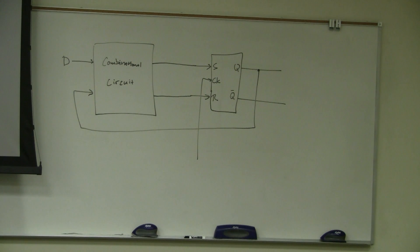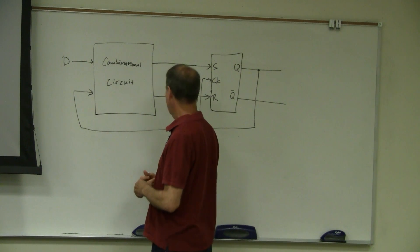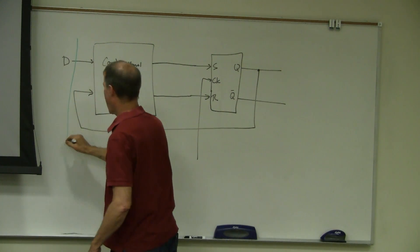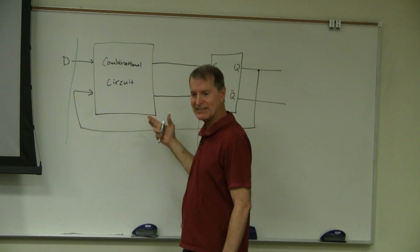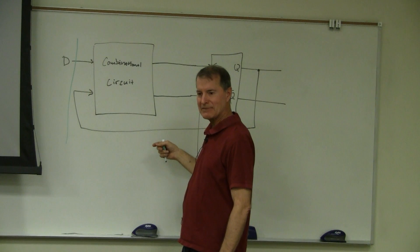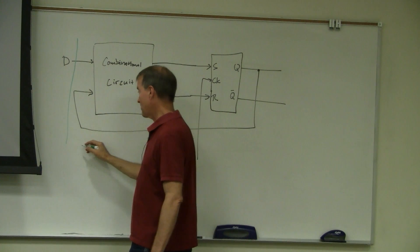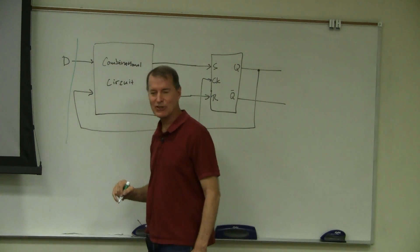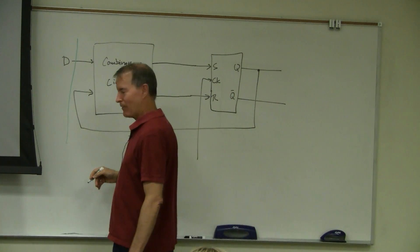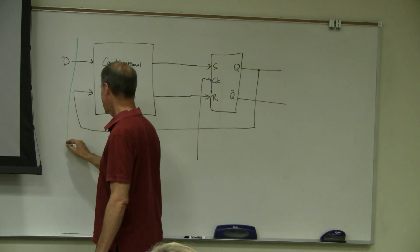Why do you need the feedback? Well, maybe you don't. Because it's supposed to be regardless of the current state — why would you need to know? Yeah, we might not have feedback. You might not know ahead of time whether you need it or not. Actually, in this case you can reason that you don't need it because the next state doesn't depend on what the current state is.